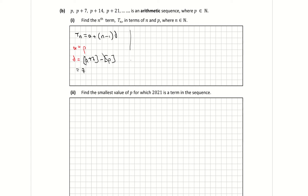So substituting into the formula: tn equals a, which is p, plus (n minus 1) times d, which is 7. Tidying up by multiplying the 7 into the bracket gives tn equals p plus 7n subtract 7. And that's our nth term.